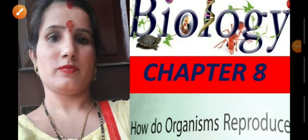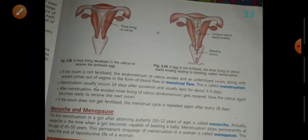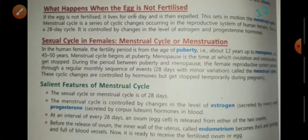Good morning students. Today we are going to start the next topic of chapter number 8: How do organisms reproduce? In the last video, you have done about the reproductive system of male and female. We have studied the whole reproductive structure of male and female.